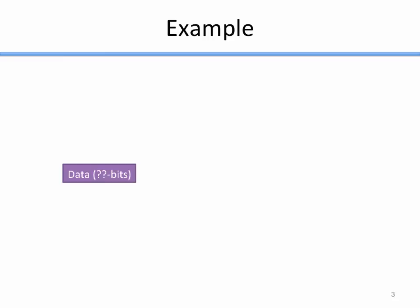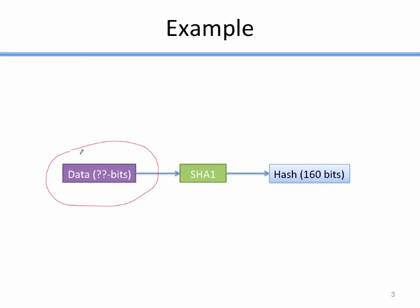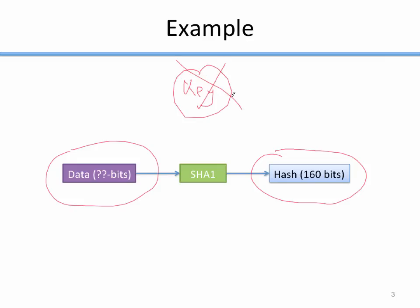Let's look at a simple example of a hash function. We have data that's an unknown number of bits — it could be very small or very large. We put that into a hash function; in this case SHA-1, a real-world hash function that outputs a hash 160 bits long. We produce a fixed-length hash of 160 bits. Hashing has no key by default — the purpose is just to convert an arbitrary amount of data into a fixed hash.